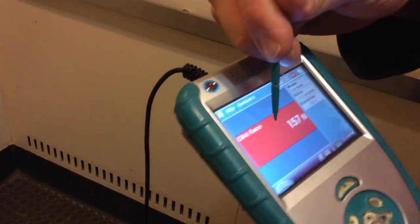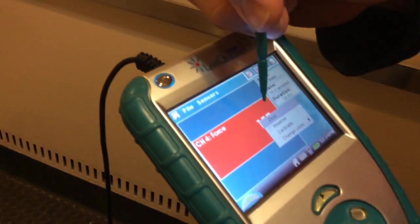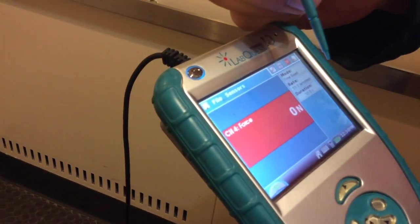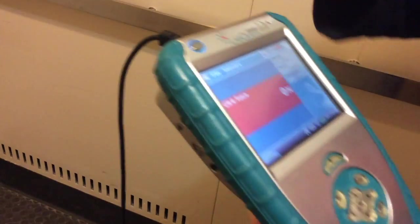So the first thing you're going to have to do is zero that out. A trick we've learned is you can just tap on the screen and hit zero, and it's just like all the electronic balances we have.